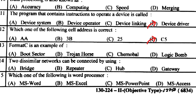Pharmacy is an example of boot sector. Two dissimilar networks can be connected by using a gateway. Which one of the following is a word processor? The answer is MS Word.